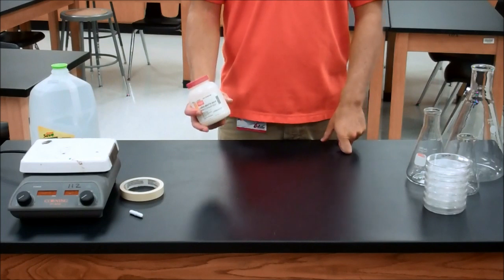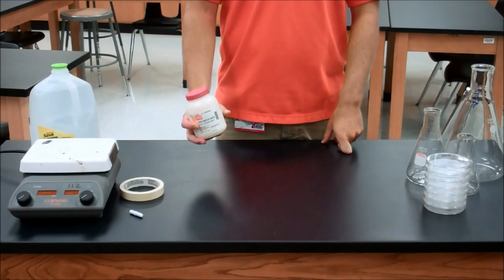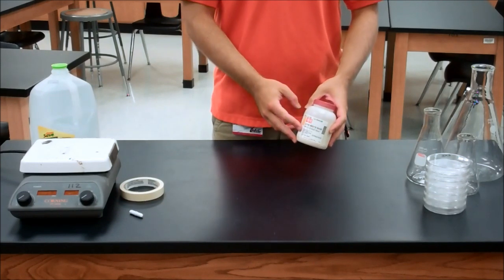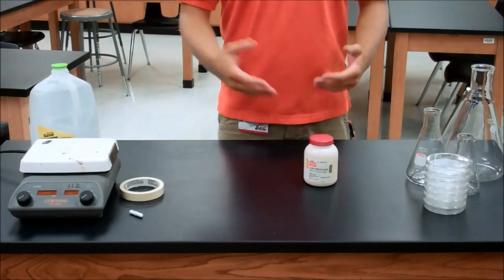The first thing to do is figure out what kind of LB base you're going to be mixing with. Many of them have directions right on the label. Like mine says 25 grams per liter of water, but yours may be different.